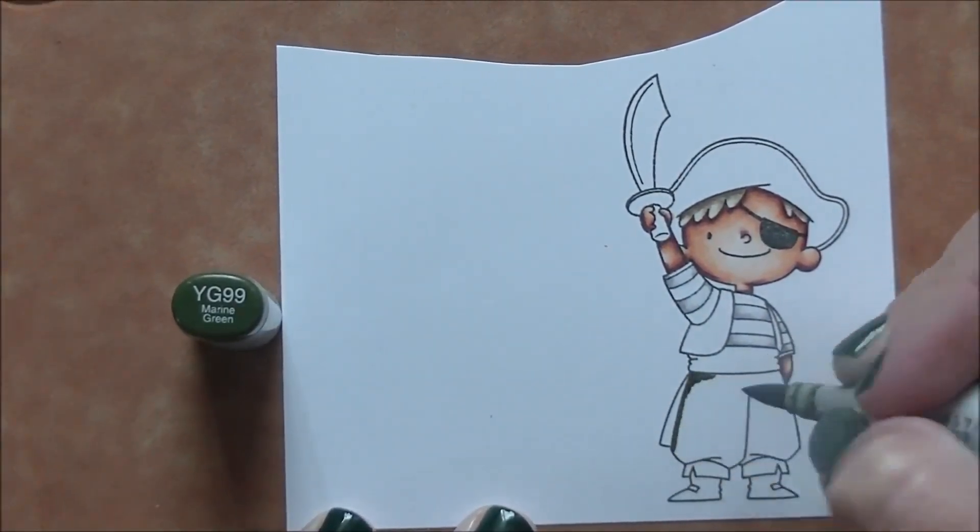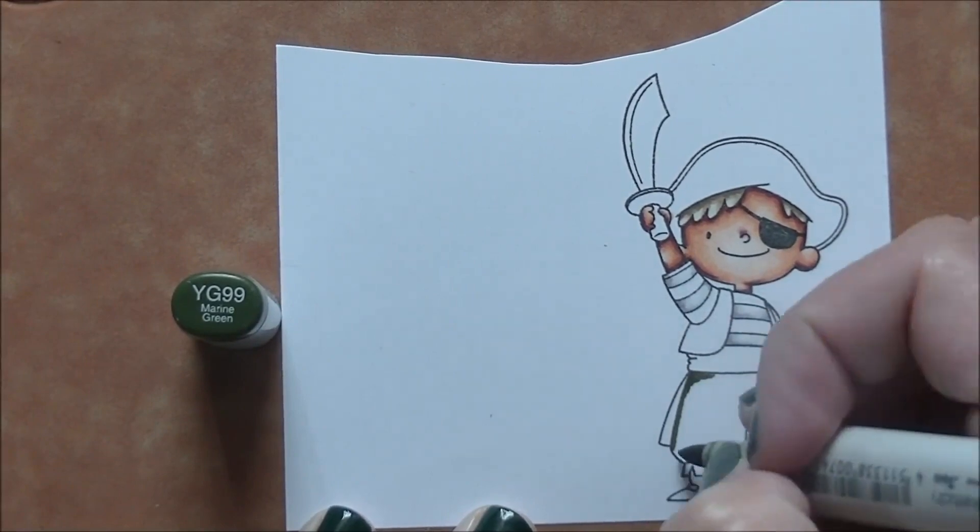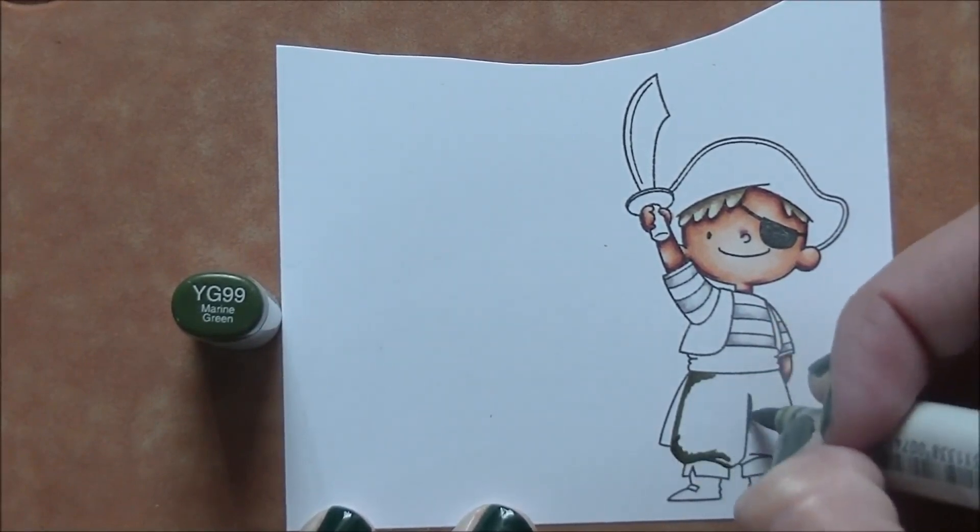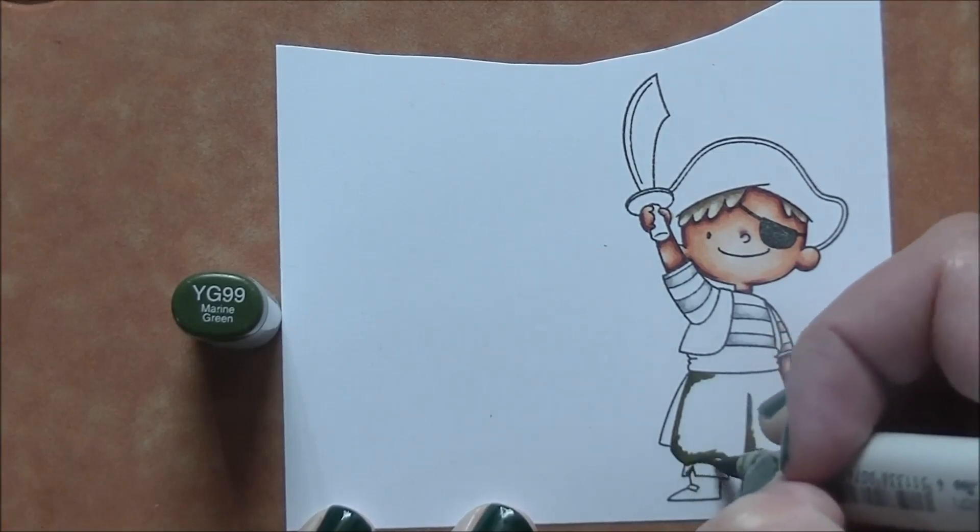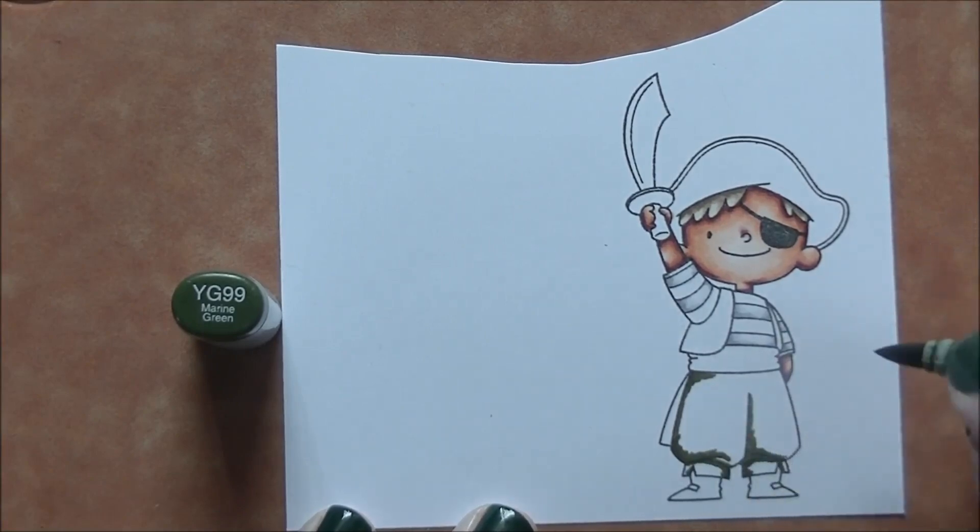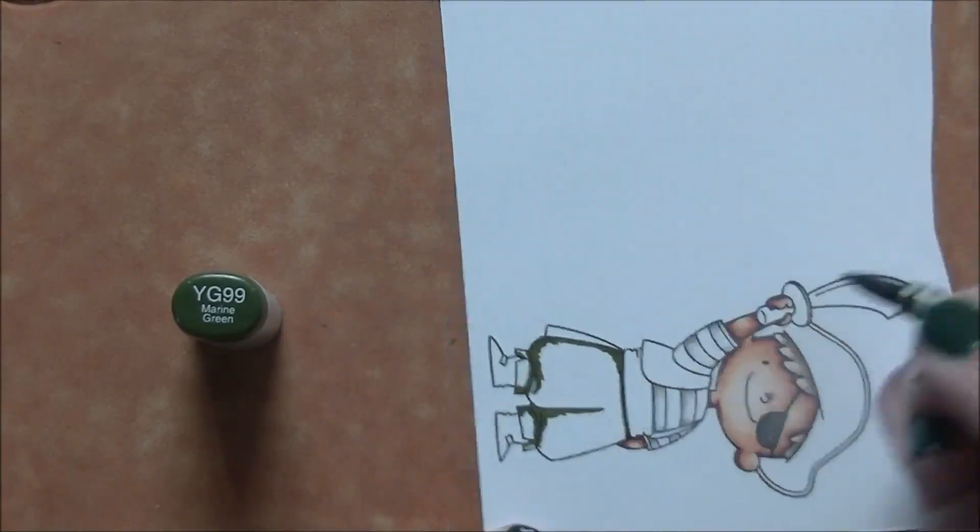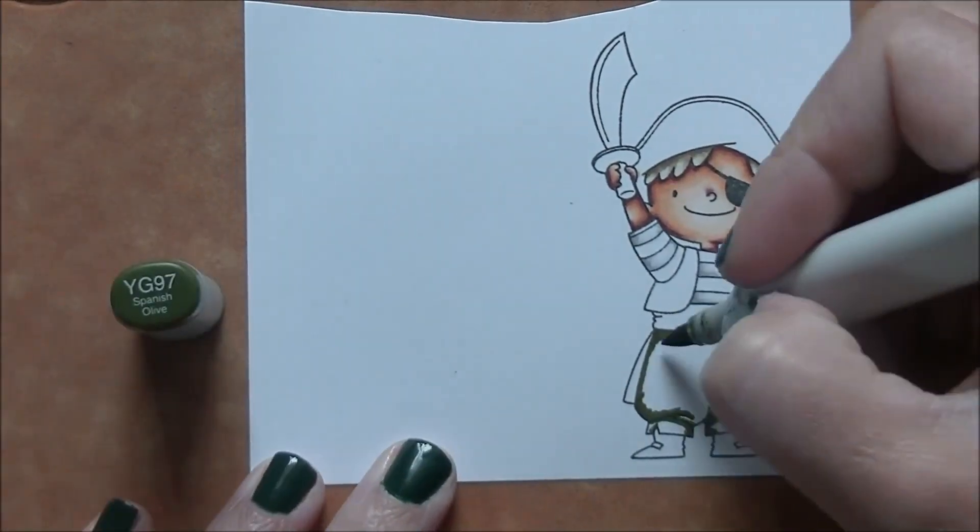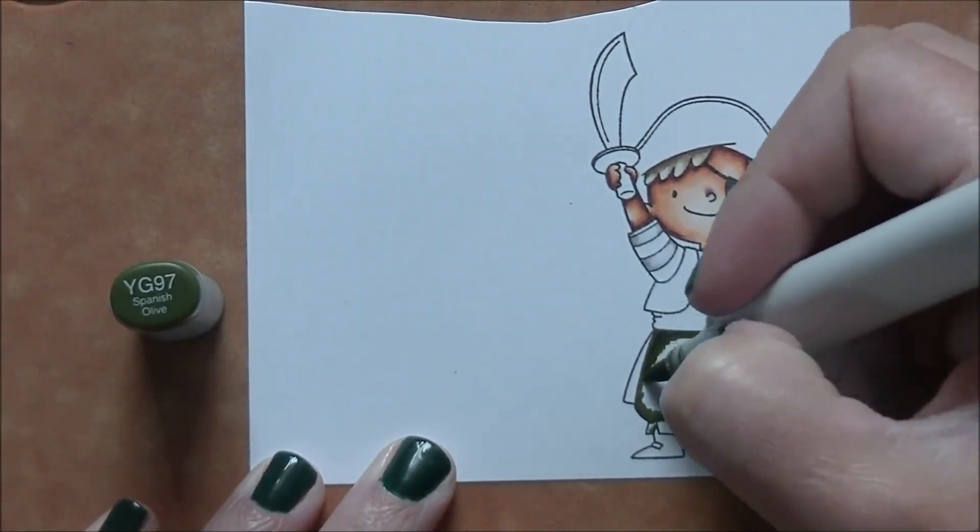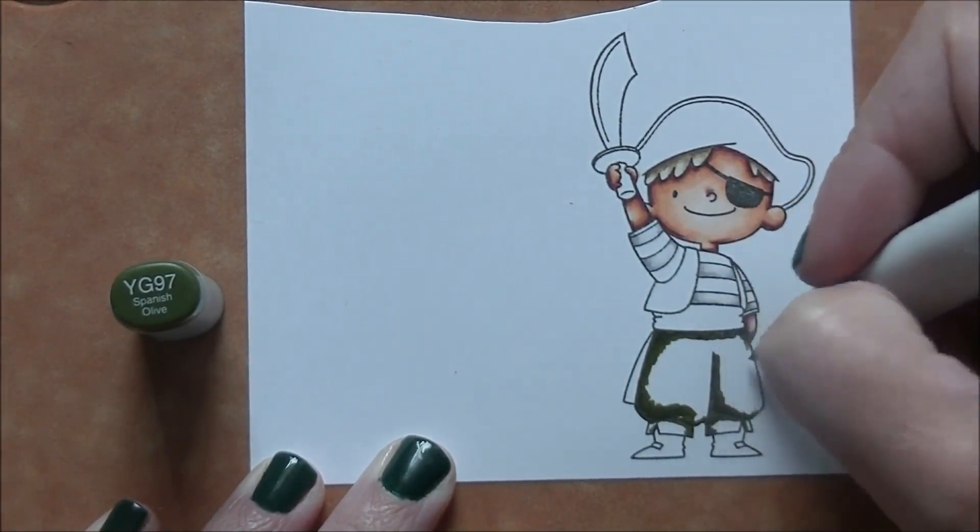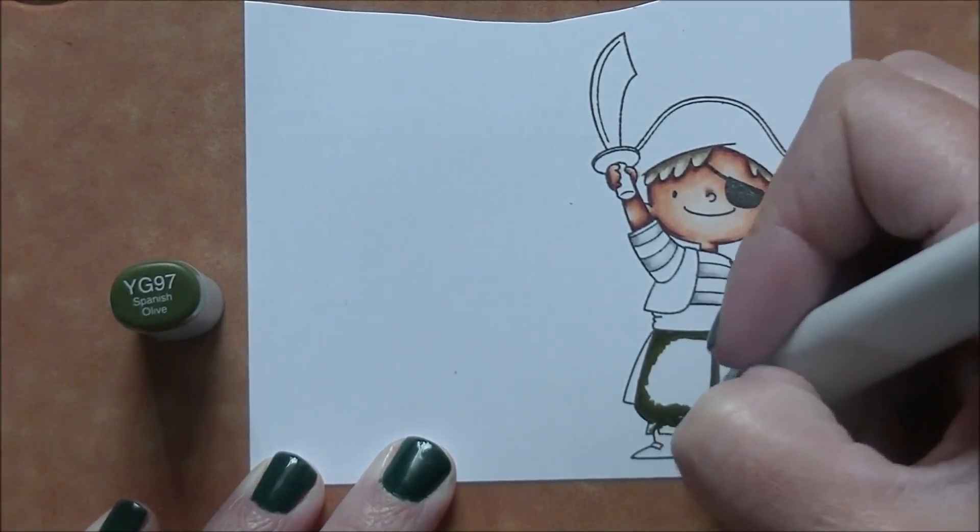It looks pretty gray here right now, but once we get the rest of those colors in, it'll start to work out. So I'm going to do his pants and his vest in this green combination. I started off with this YG 99 and then 97 just to add a bit of a green base underneath, but I do go over top of everything with the E80 markers, which is kind of the main focus of this color combo.